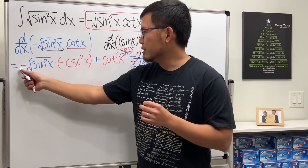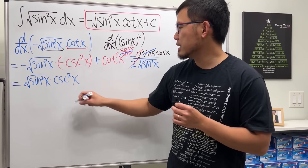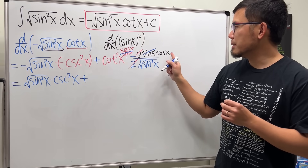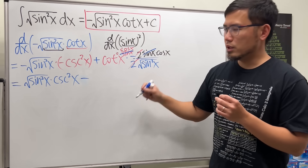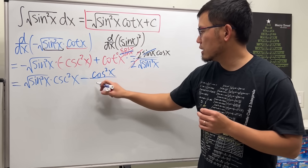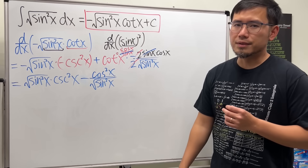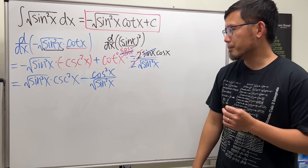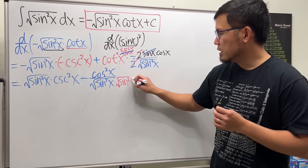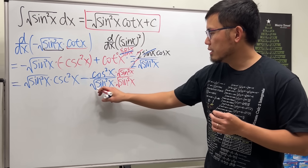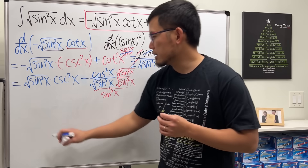So we have positive square root of sine squared x times cosecant squared x, and then we subtract — because it's plus times negative — cosine squared x over square root of sine squared x. We don't cancel the square root and the square because we don't want to end up with absolute value. Now I'm going to rationalize the denominator by multiplying top and bottom by square root of sine squared x.